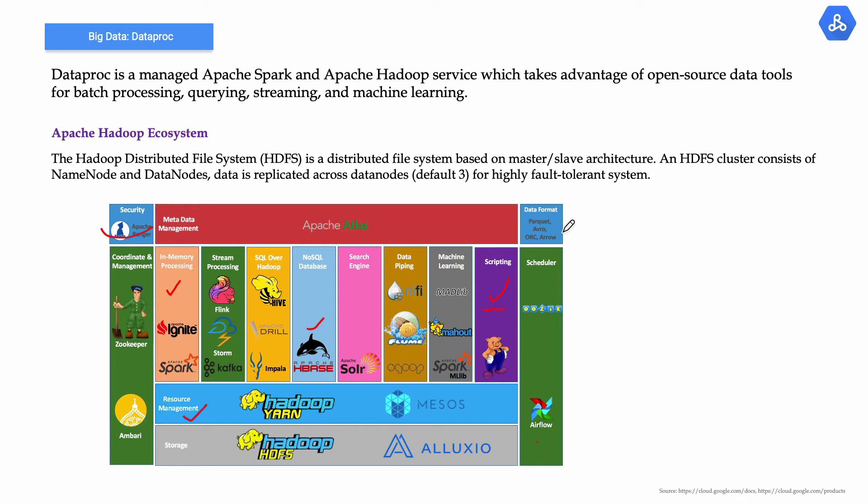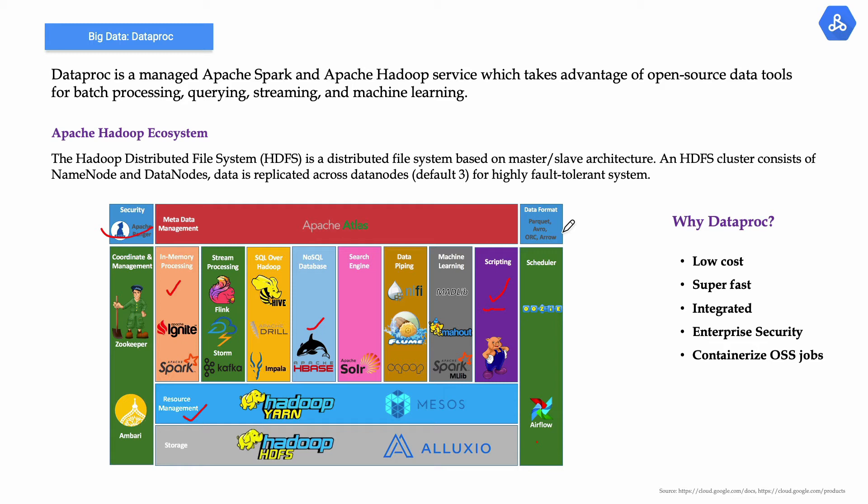Why would you use Dataproc on Google versus either an on-premise setup or any other cloud providers like AWS or Azure? There are primarily these reasons. Low cost: Dataproc is priced at only one cent per virtual CPU in the cluster per hour, on top of other cloud platform resources. Dataproc clusters can use preemptible instances, which have very low compute prices. Dataproc charges only for what is really used with second-by-second billing and a low one-minute minimum billing period.